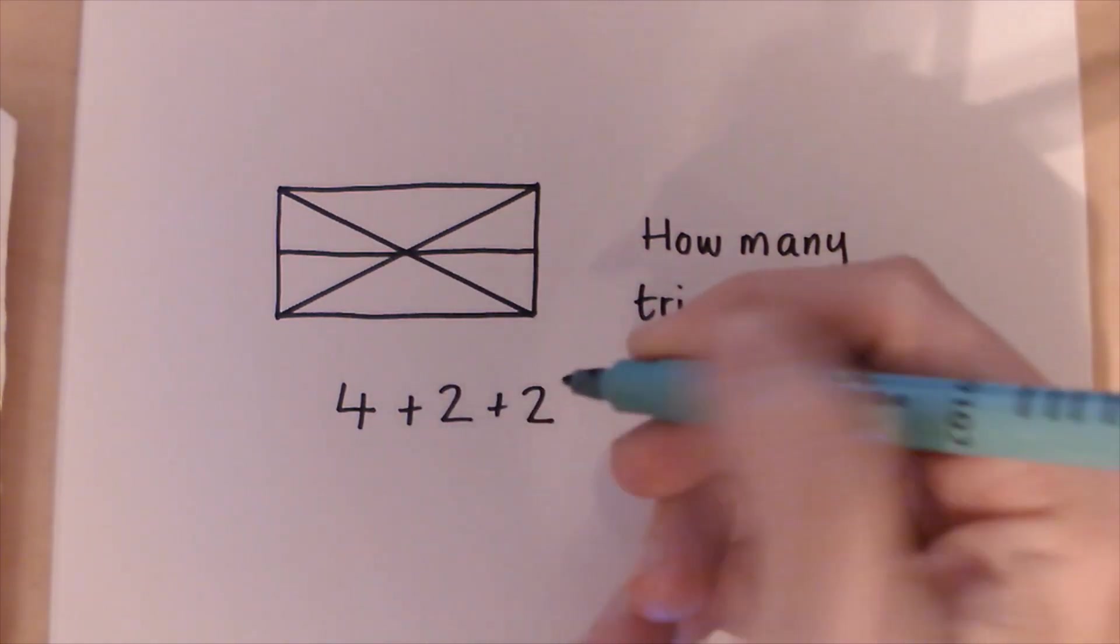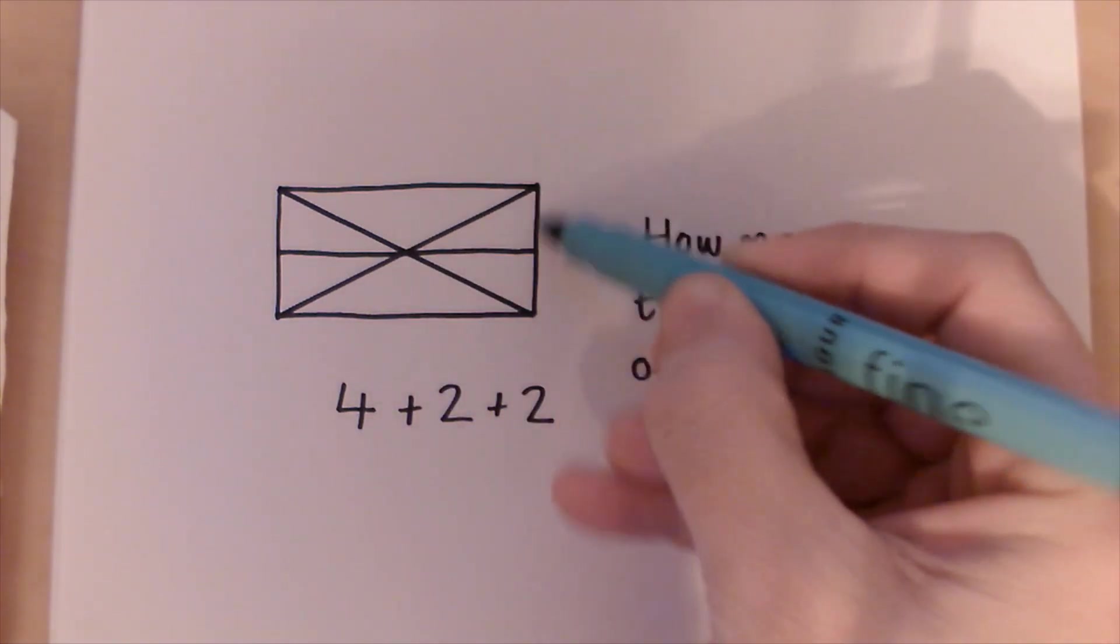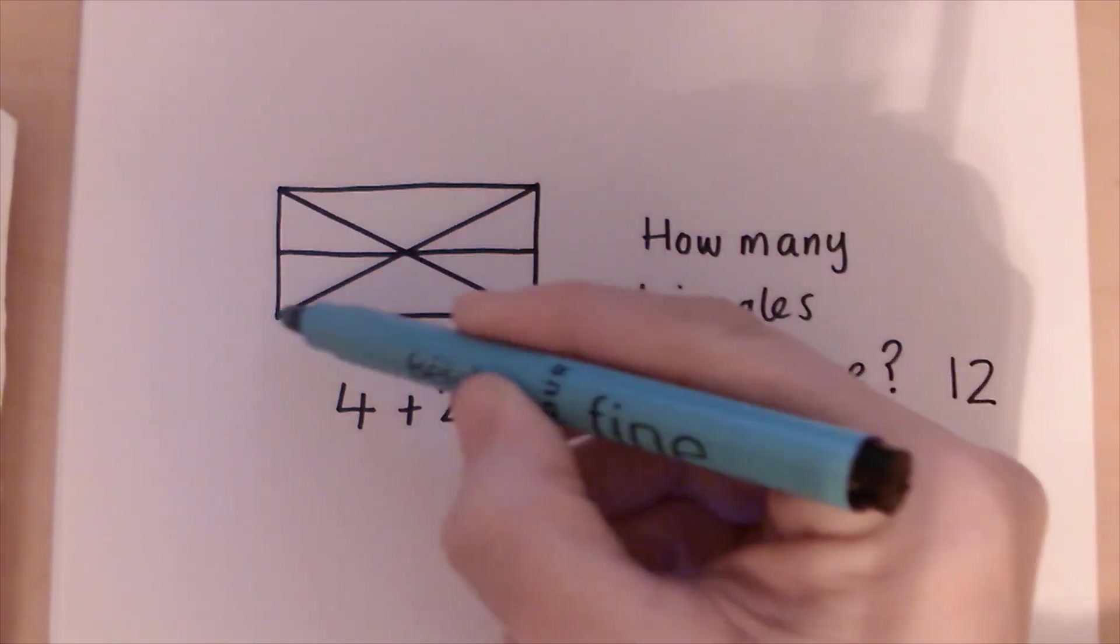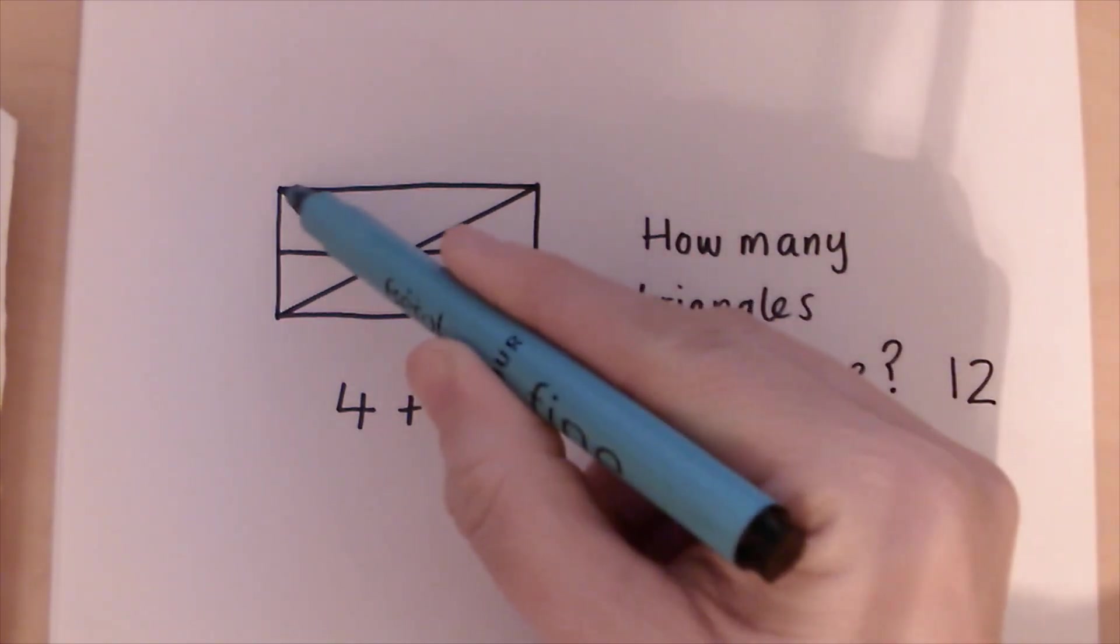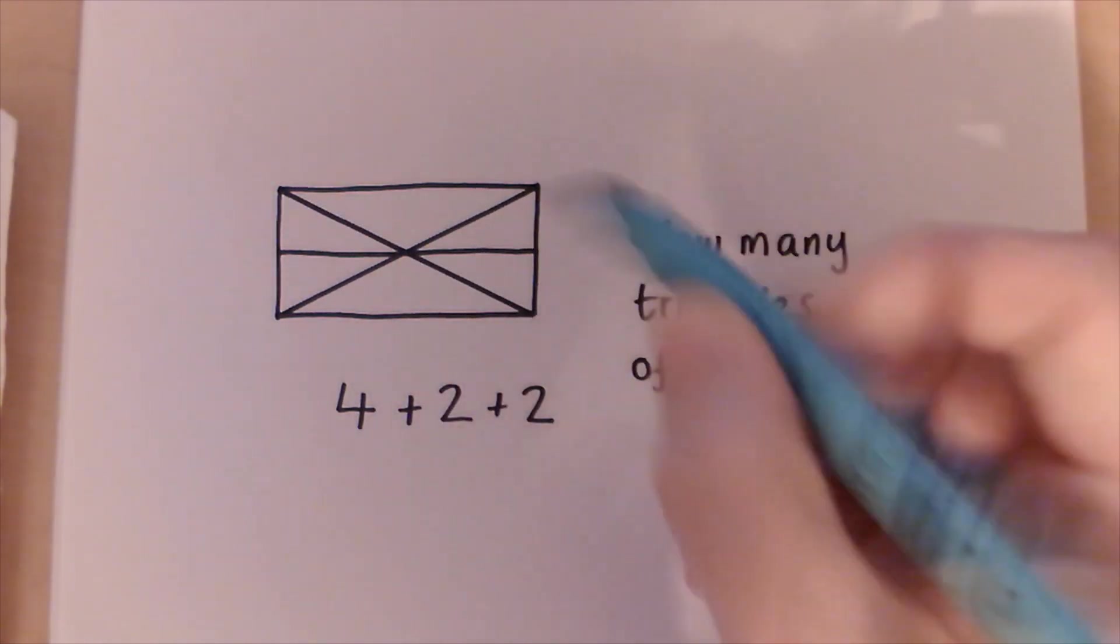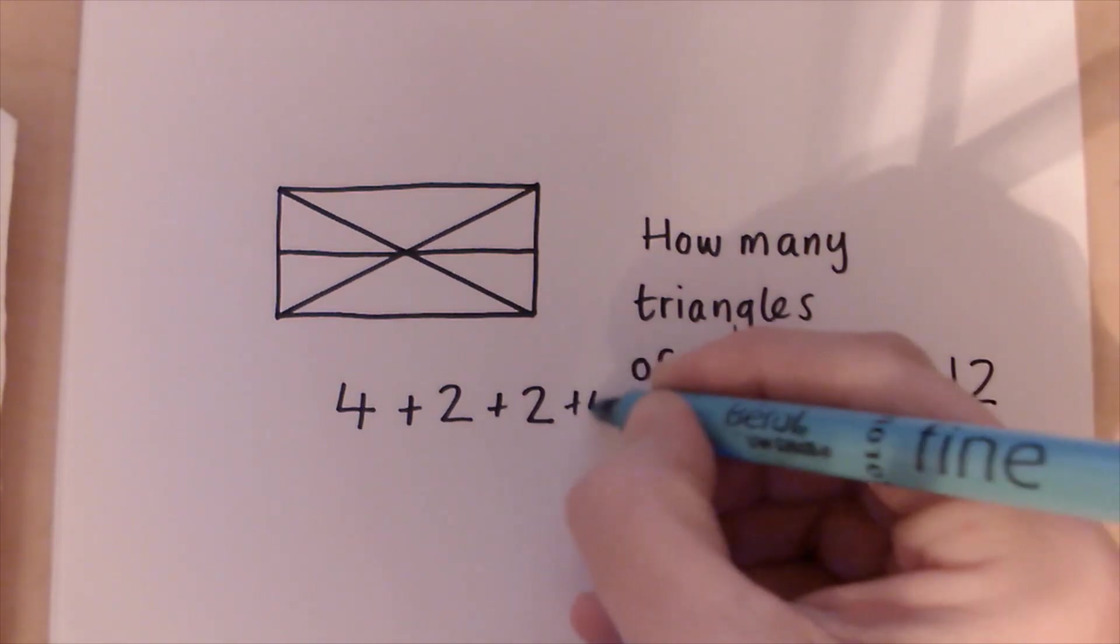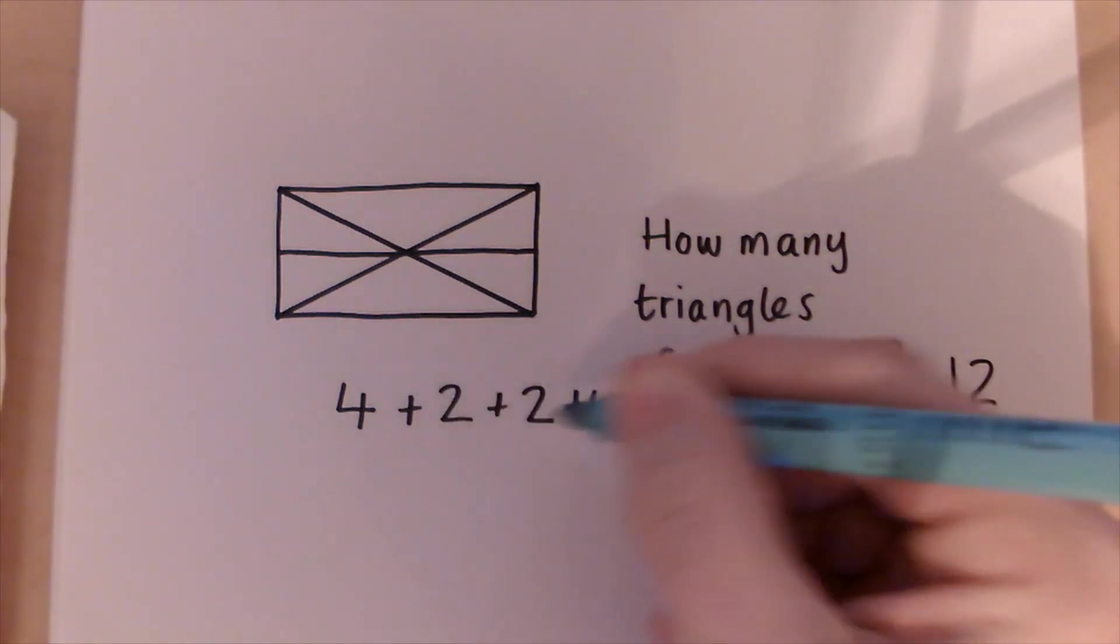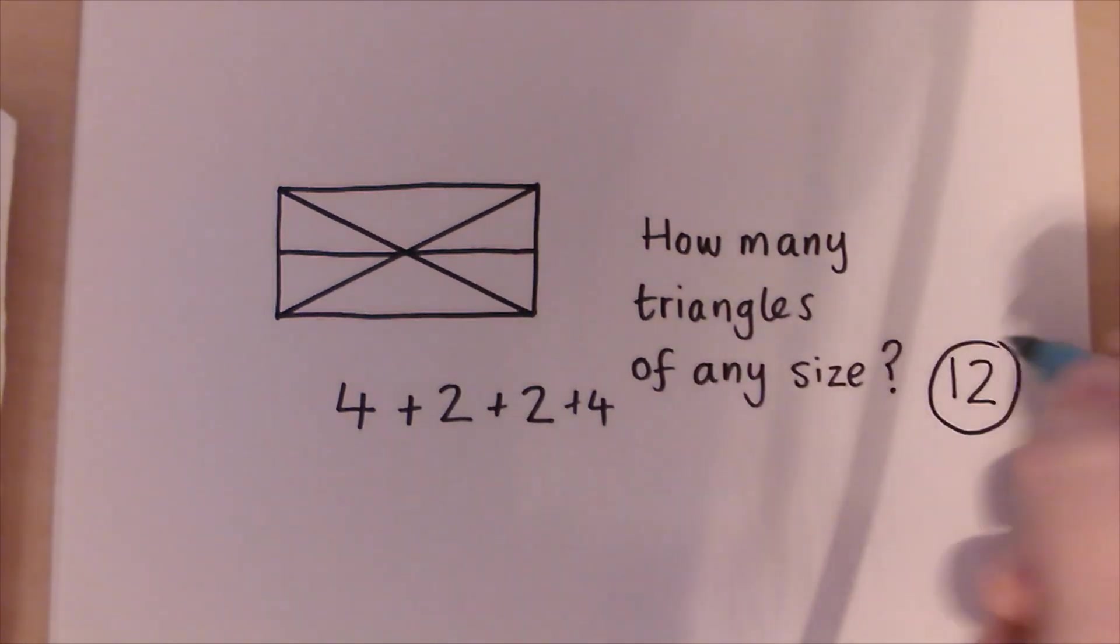And then the last ones we've got are these right angled triangles, one and then we've got two. Then we'll have them upside down as well, so three that way and four. So we've got another four as well. So four add two add four add two is our answer of 12.